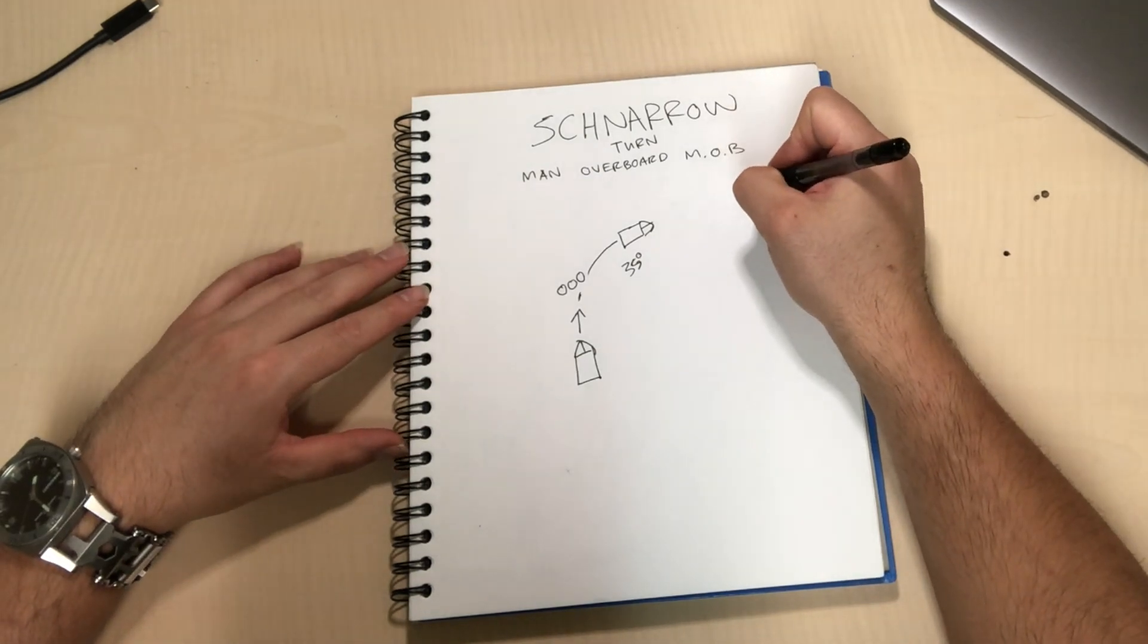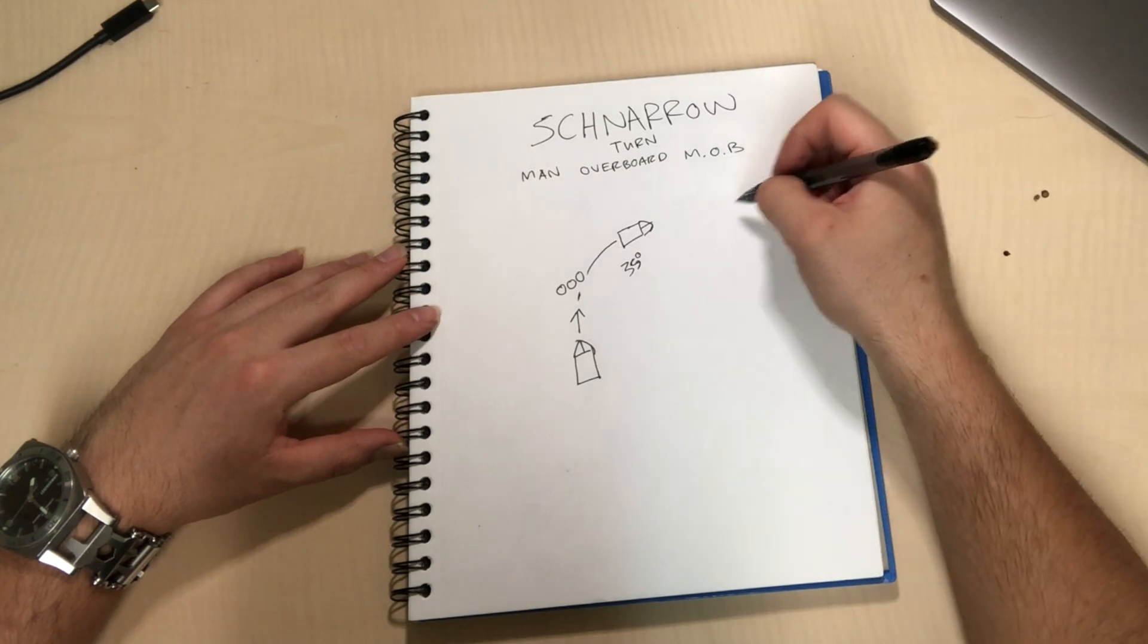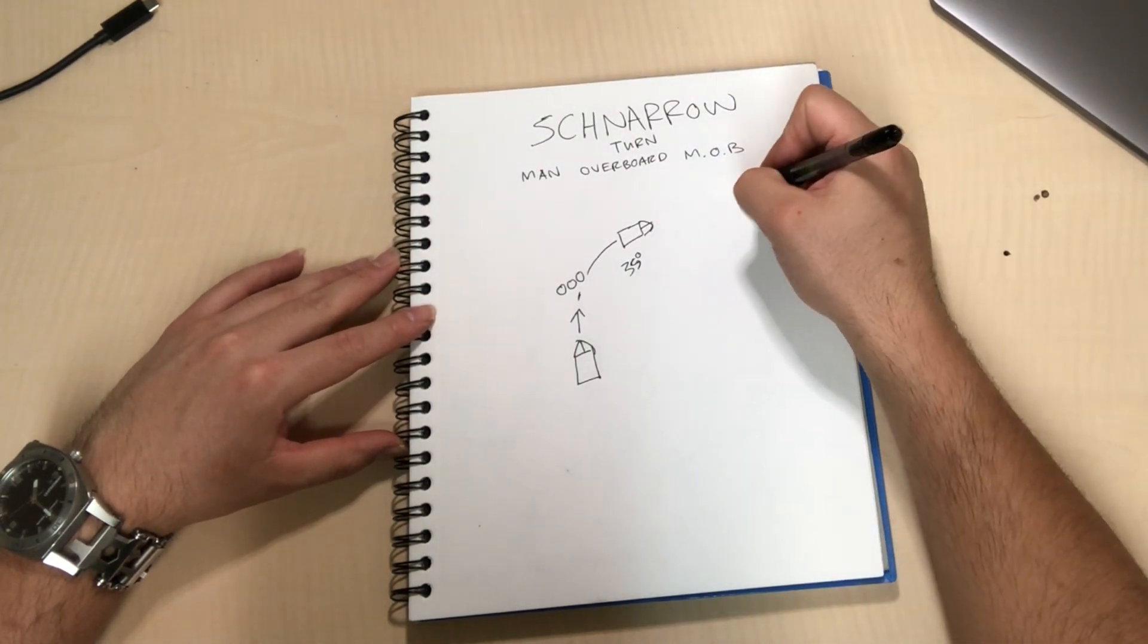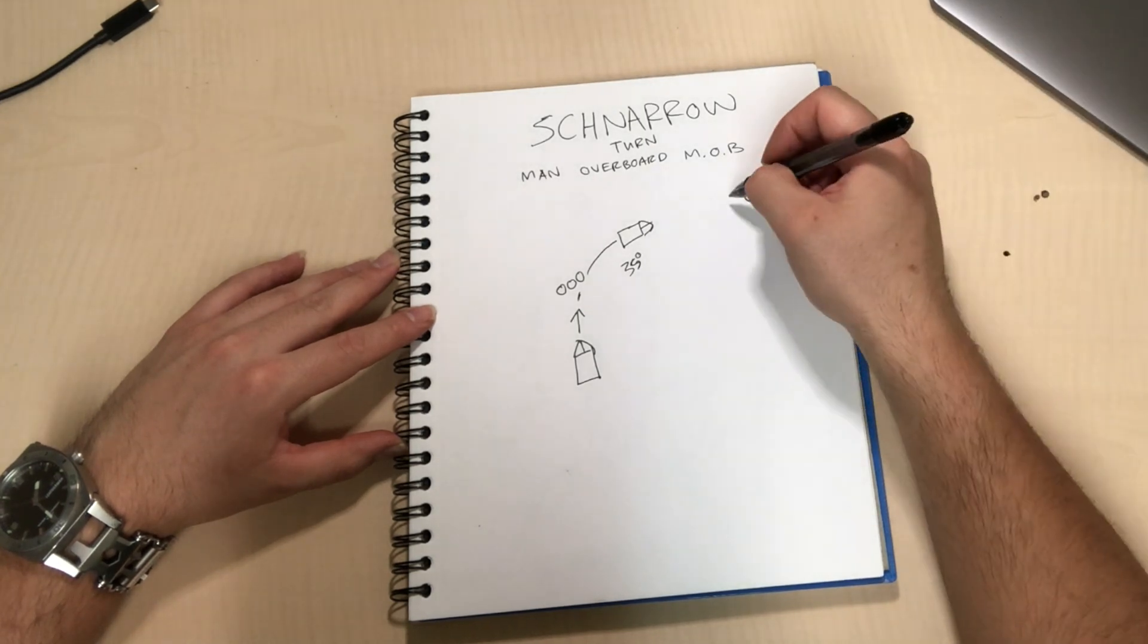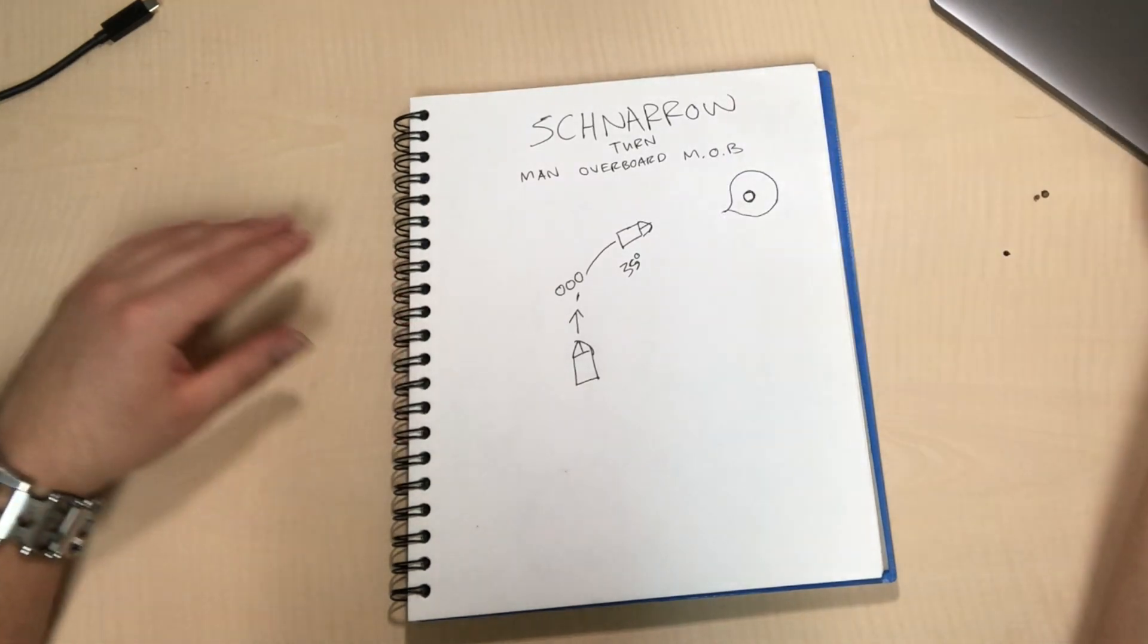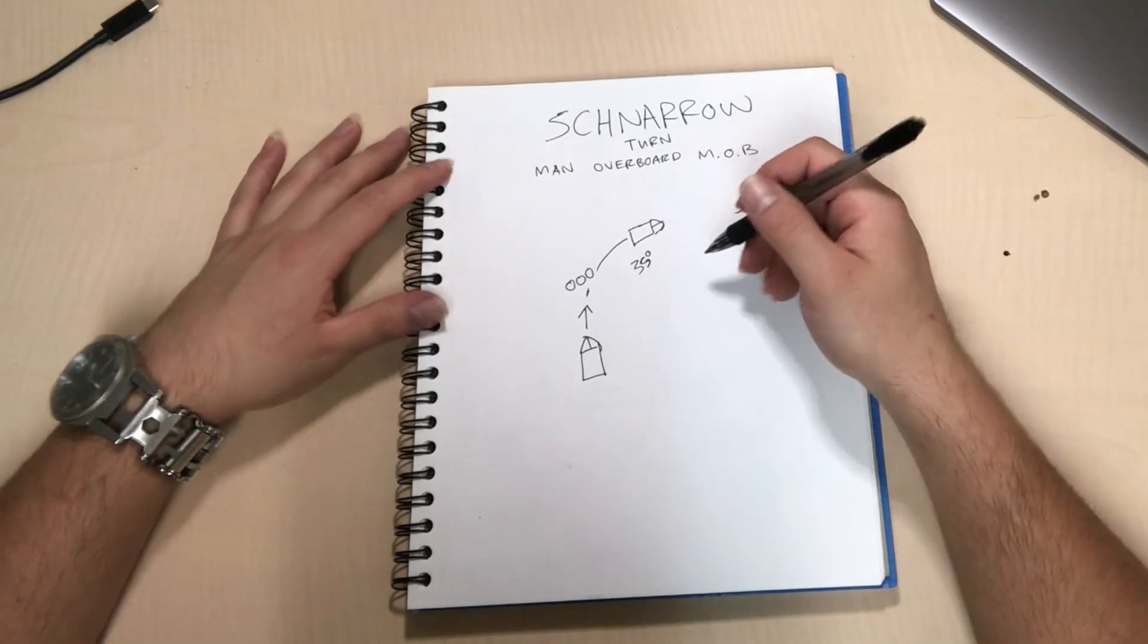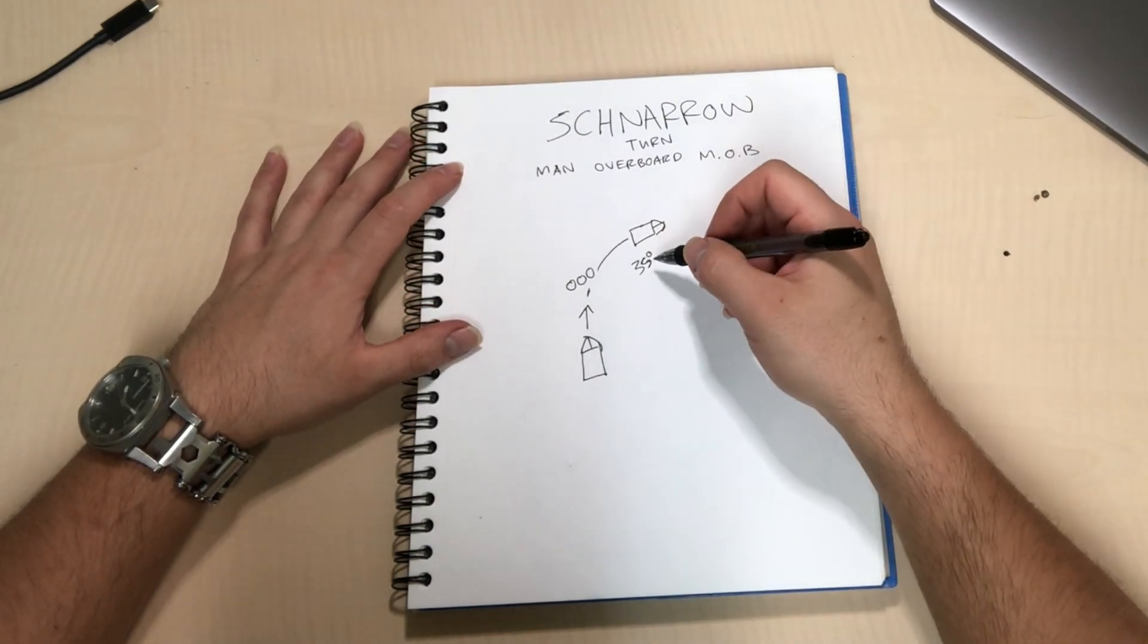So the difference between doing a 10 degree rudder circle and a 35 degree is this is gonna be your 35 degree man overboard circle, this is gonna be your 10 degree rudder angle circle that you do. But anyways, for the Scharnow turn you're gonna want to do 35 degrees hard over.